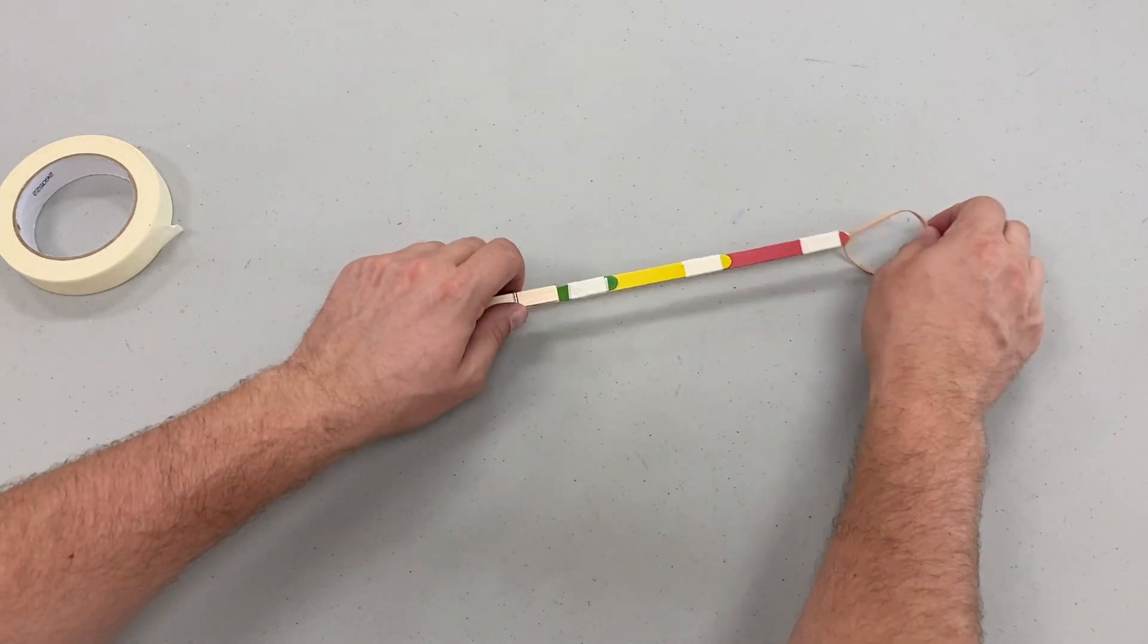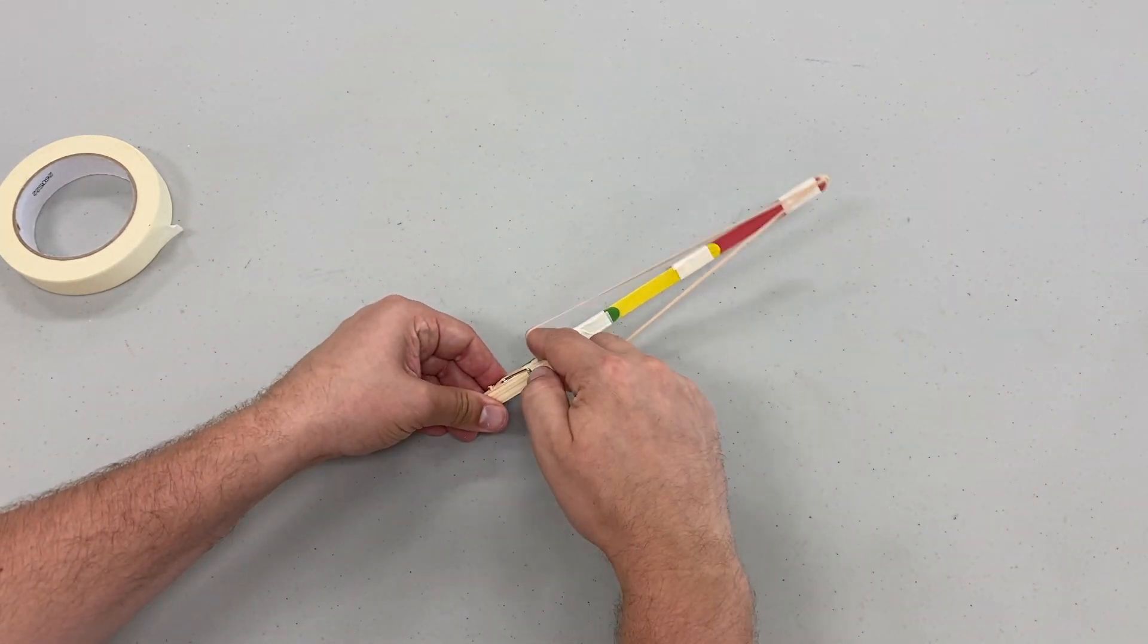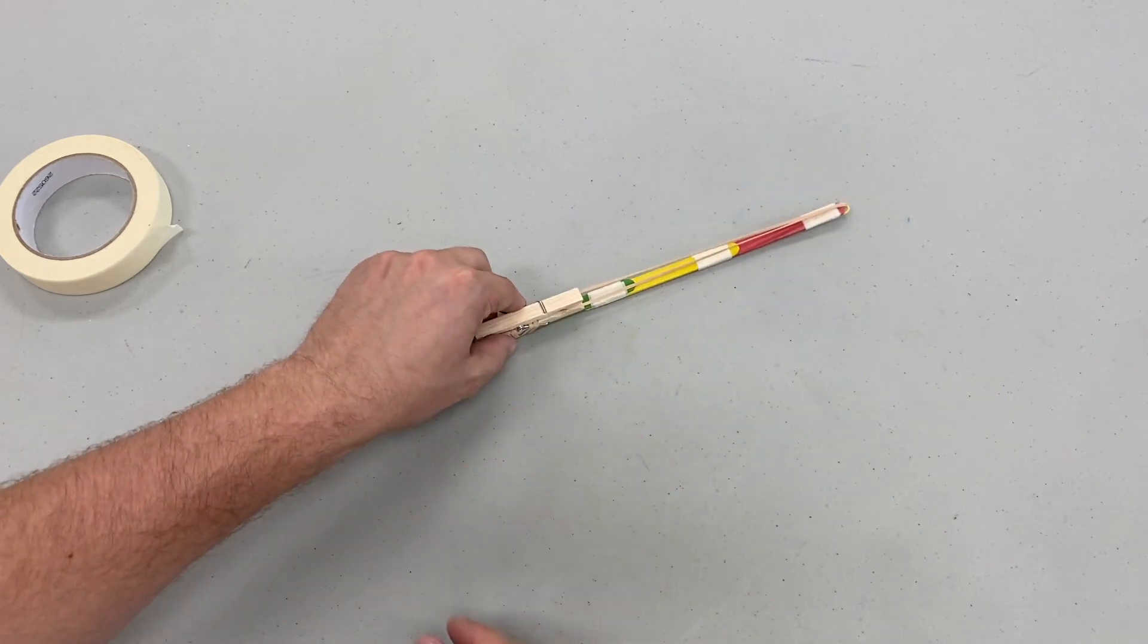You're now ready to fire. Open your clothespin and pull your rubber band back and then clip your clothespin back down to secure the rubber band.